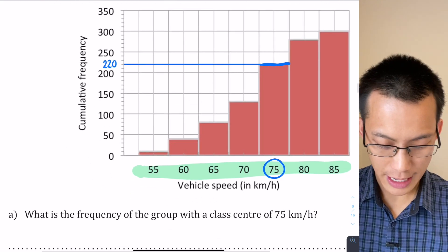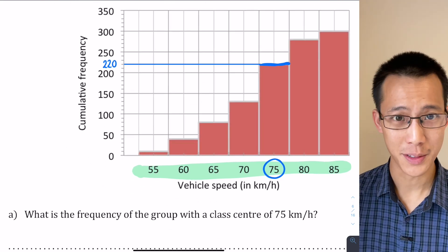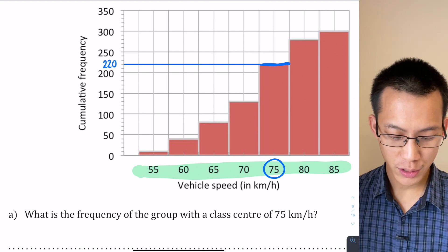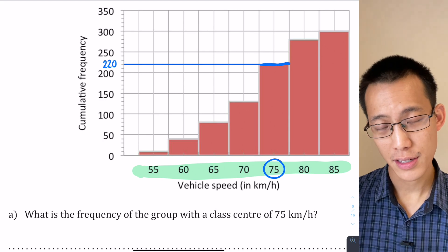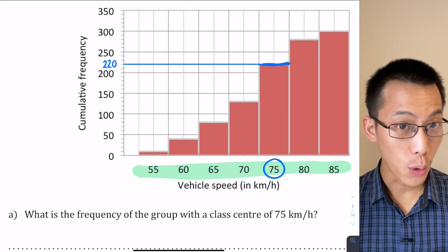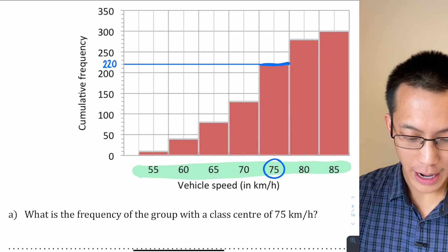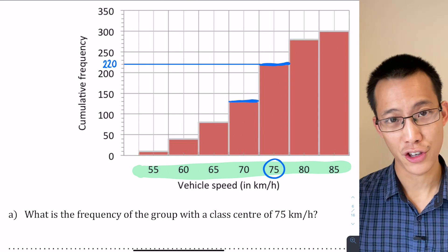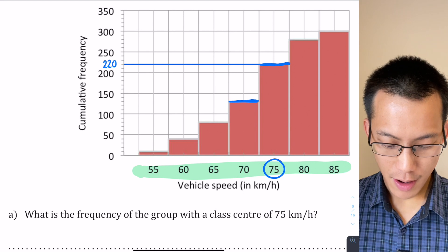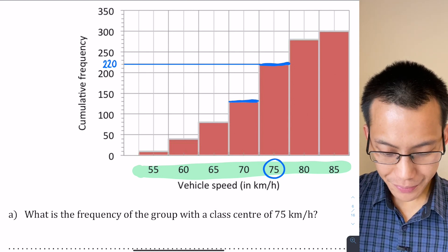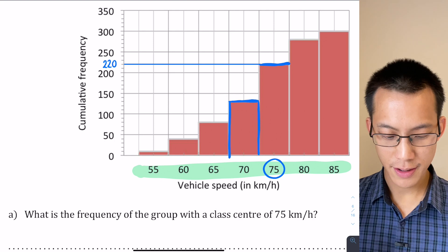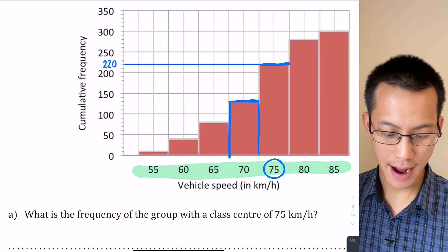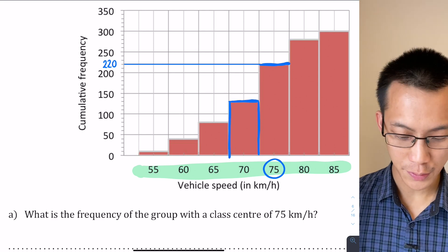Now 220 is not the frequency of that class, it's the cumulative frequency. So that includes all of the previous classes. In order to work out the frequency of this class alone, I have to subtract all of the previous classes and the way I do that is by looking at this previous step in the cumulative frequency graph. When I have a look at this bar here, this bar represents not just the vehicle speeds of 70 kilometers but 70 kilometers and 65 and 60 and also 55.